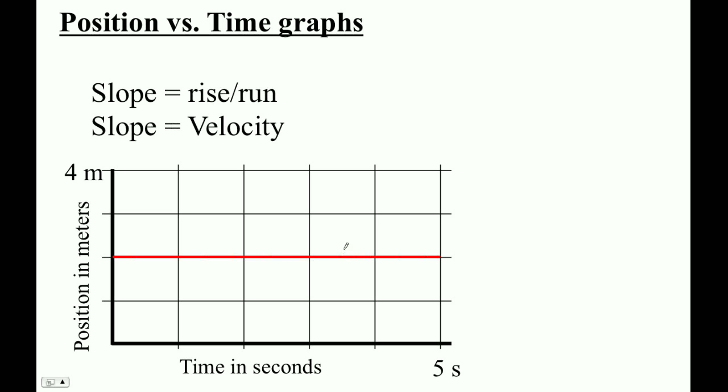Let me give you an example of that. Here's an object sitting still. You know it's sitting still because at one second, two seconds, three seconds, etc., it always is in the same position. Well, the slope of that line is zero. It's a flat level line and the slope is zero. So therefore the velocity is zero and the slope is zero.